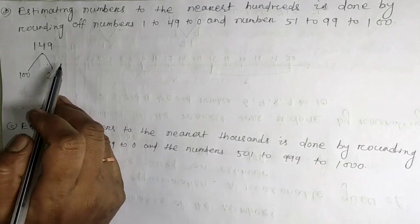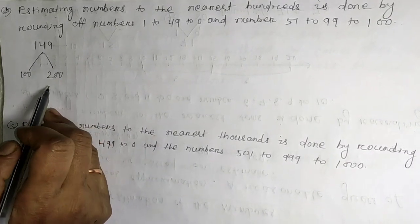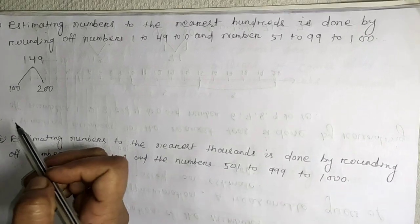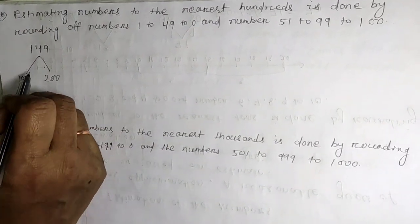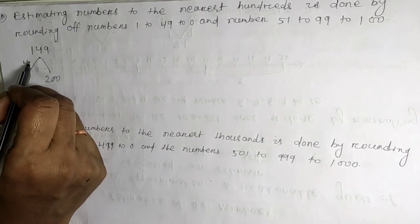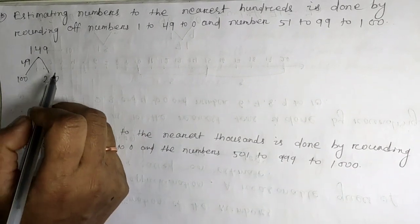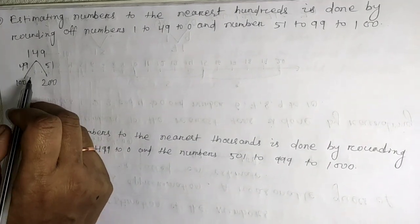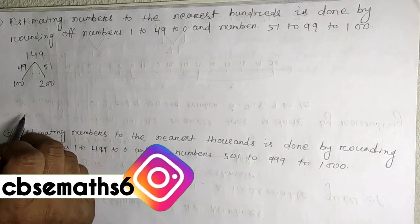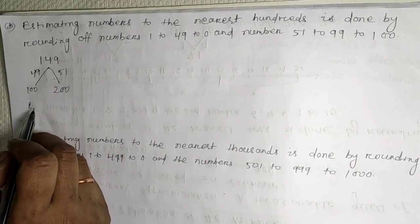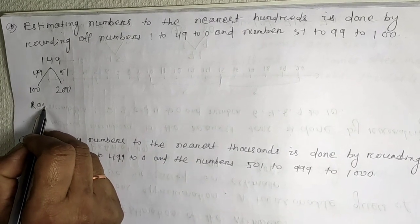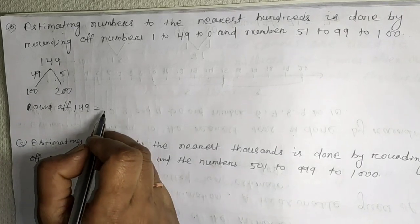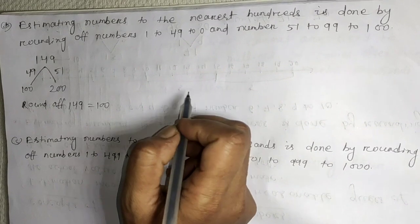For example, 149 — round off 149. It lies between 100 and 200. The difference between 149 and 100 is 49, and the difference between 200 and 149 is 51. So the closest is 100. Therefore, round off of 149 is 100.